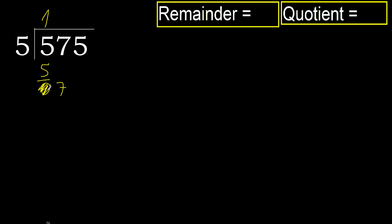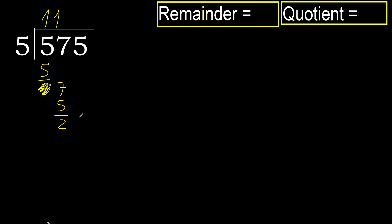Eliminate 0 on this side. Bring down 7. 5 multiplied by 2 is 10 — it is greater. Multiply by 1 is 5 — it is not greater. Subtract. Next.